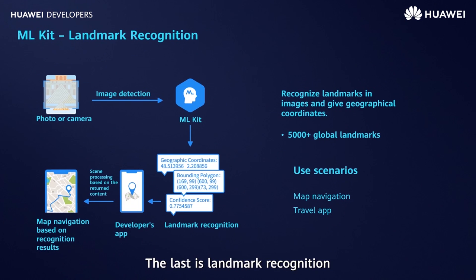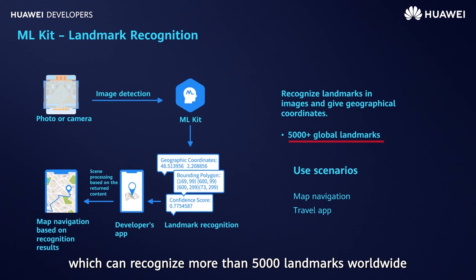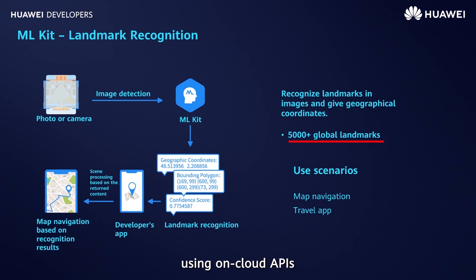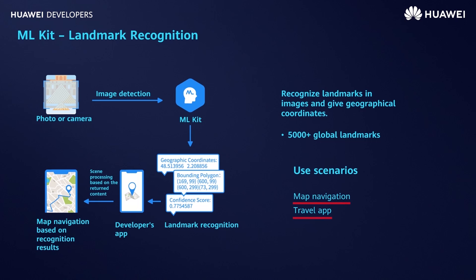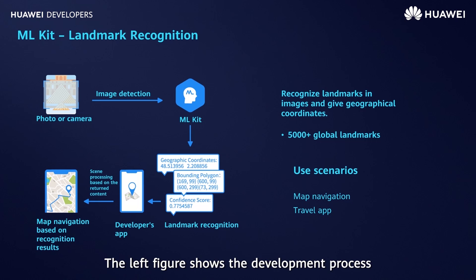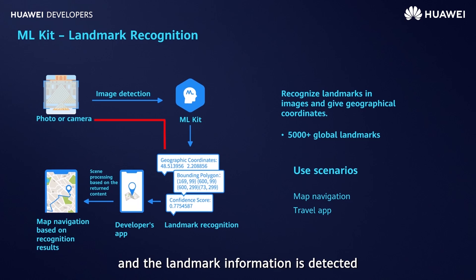The last is landmark recognition, which can recognize more than 5,000 landmarks worldwide using on-cloud APIs. This capability is useful for map and travel apps. After images are input into the ML SDK and the landmark information is detected, you can perform post-processing on the result.